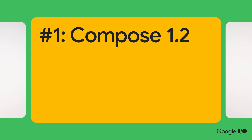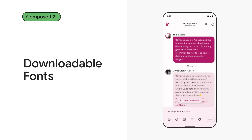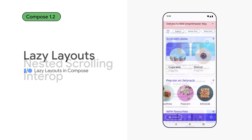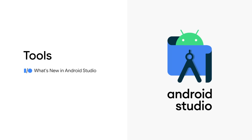Number one: Jetpack Compose 1.2 reached beta, which means API stable. The 1.2 release continues to add more advanced features you've been asking for, like downloadable fonts, more powerful lazy layouts, and nested scrolling interrupt. It also integrates with Android Studio features such as live edit, recomposition debugging, and animation preview.